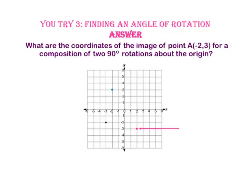Two 90 degree rotations — a 180 degree rotation — takes our original coordinates and makes the signs opposite. So negative 2 becomes positive 2 and positive 3 becomes negative 3. Our rotation of point A at negative 2, 3 for a composition of two 90 degree rotations about the origin is point 2, negative 3.